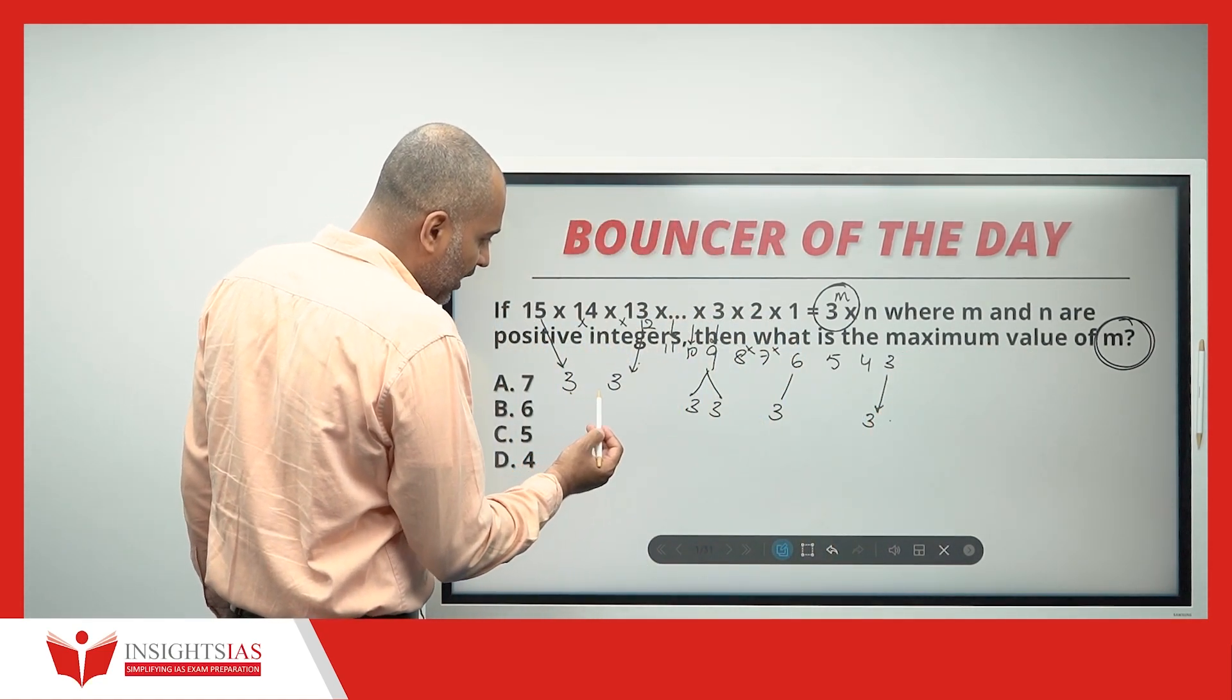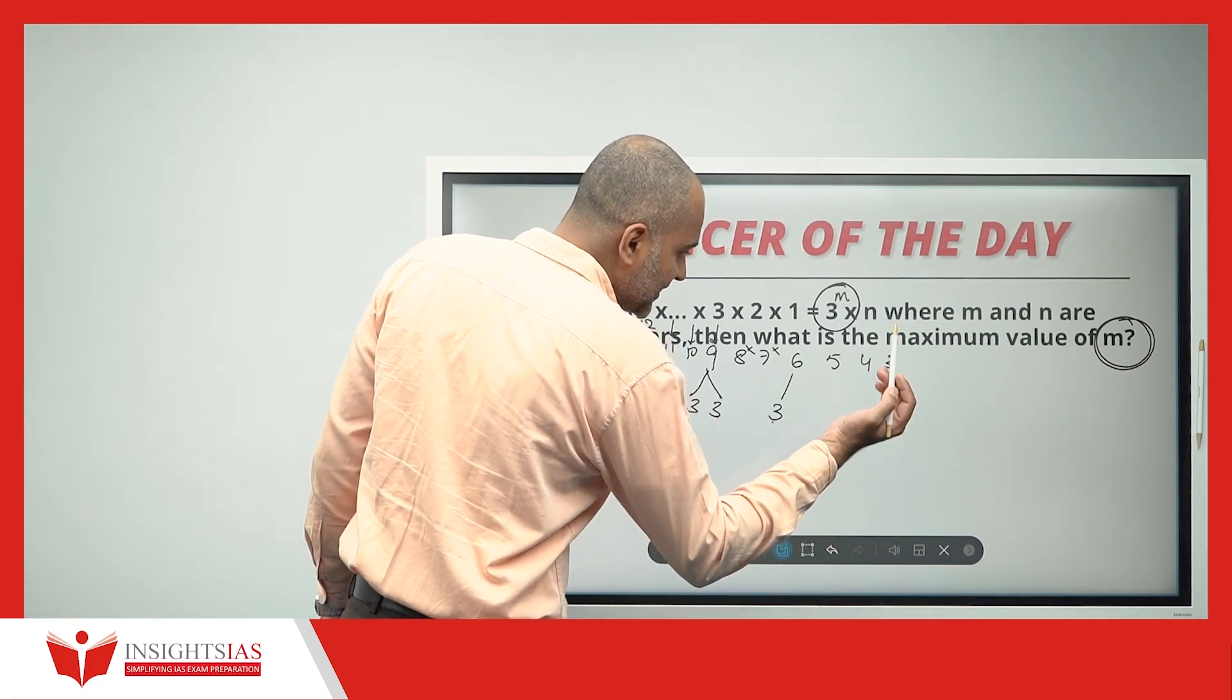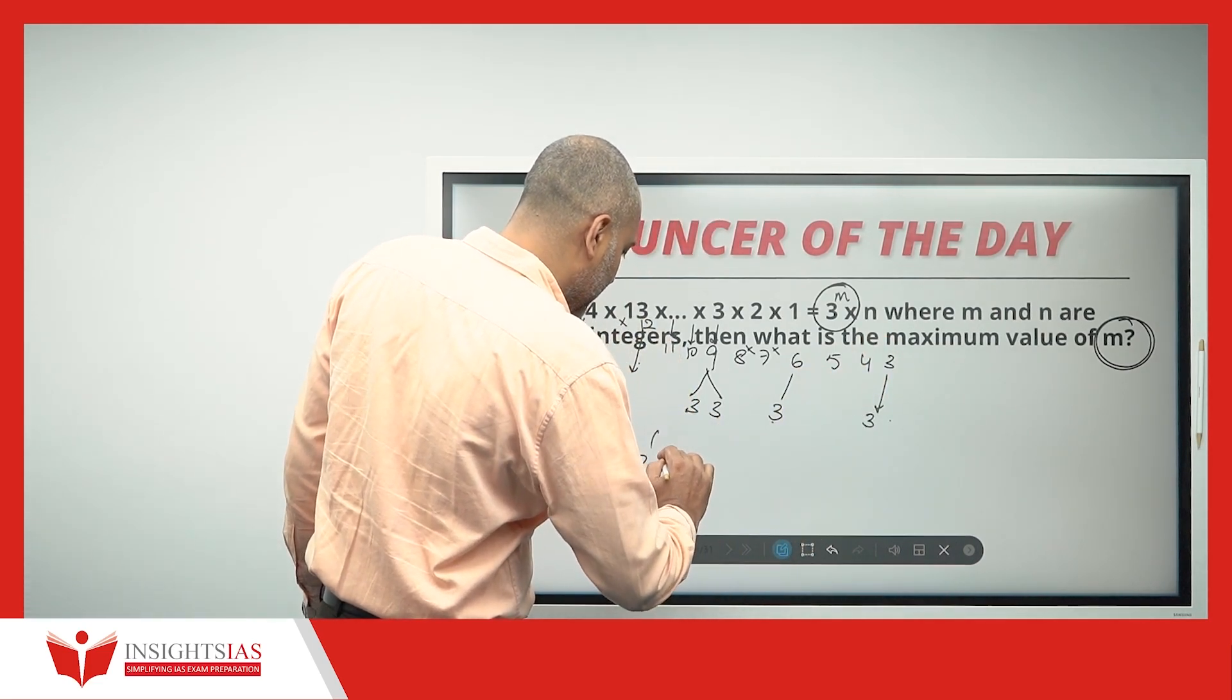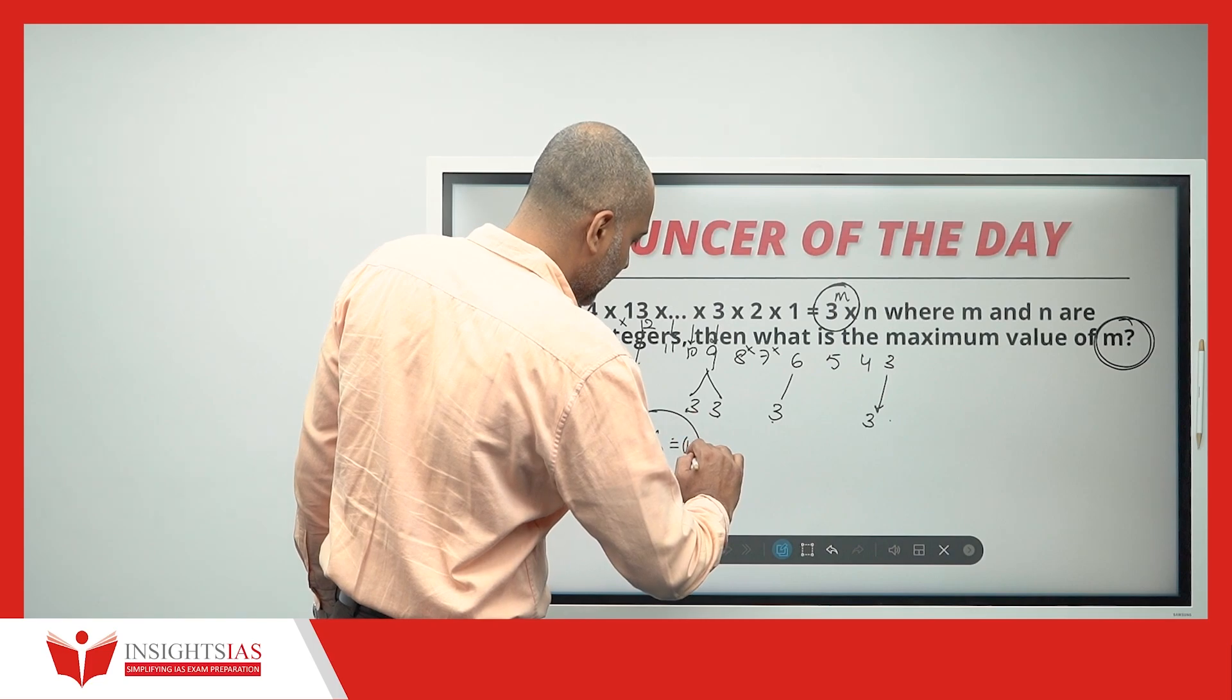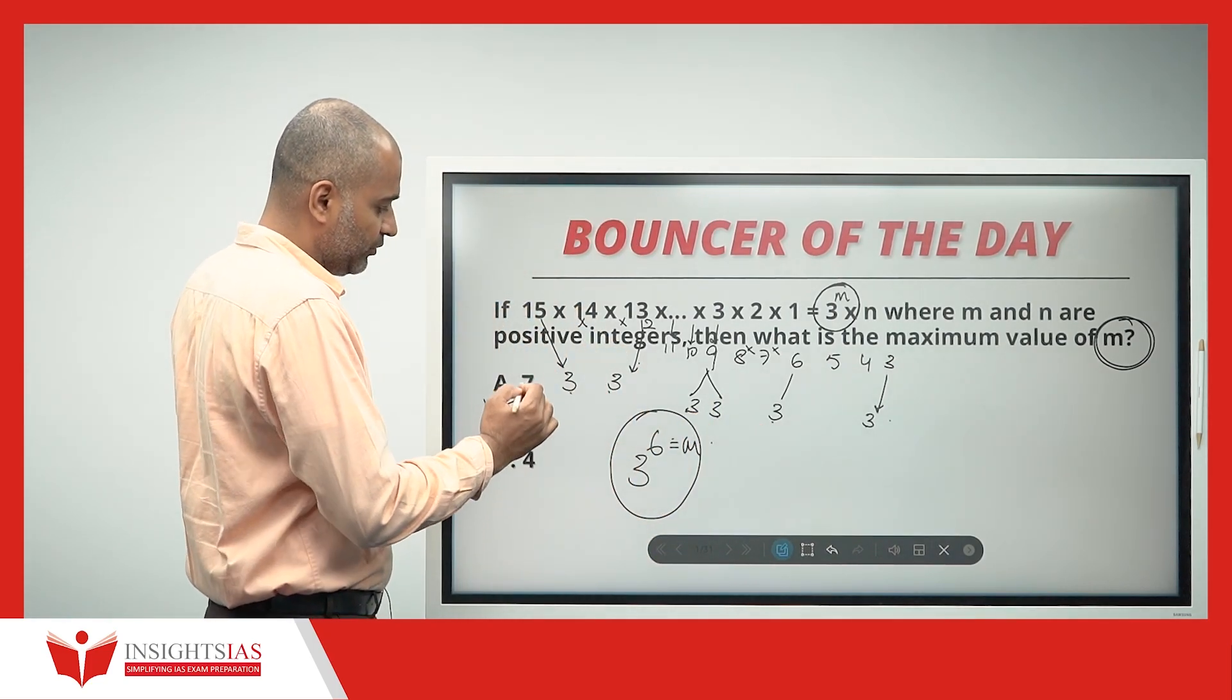So, how many 3s are there? 1, 2, 3, 4, 5, 6. So, maximum power of 3 is 6, where that 6 is given as m here. So, the value of m is 6.